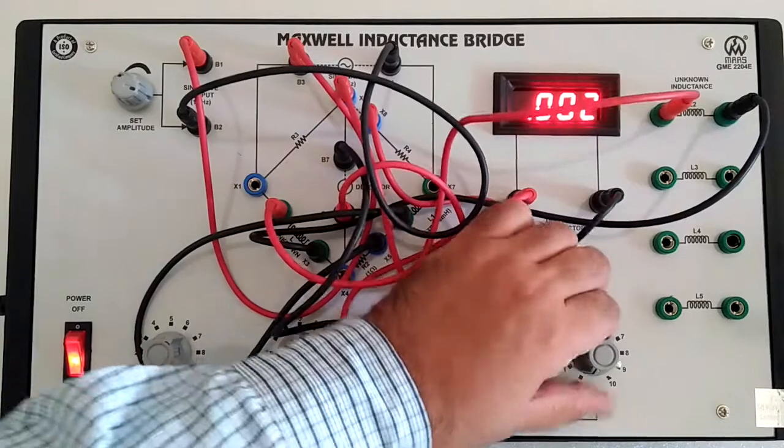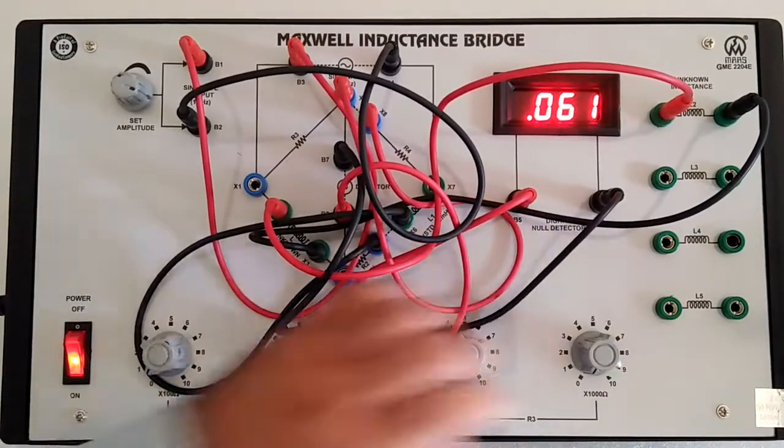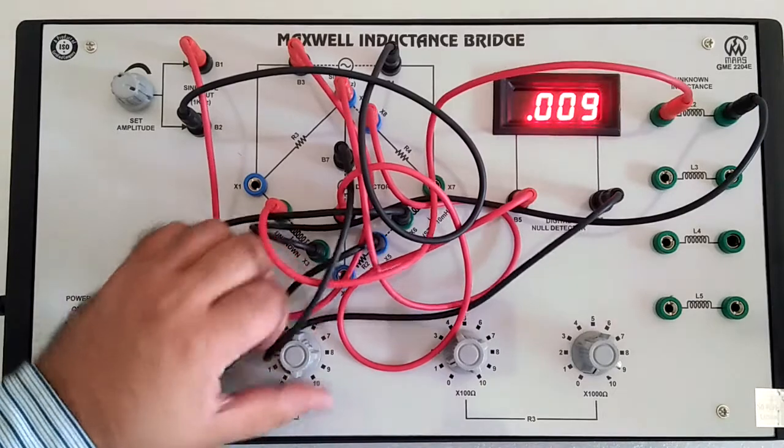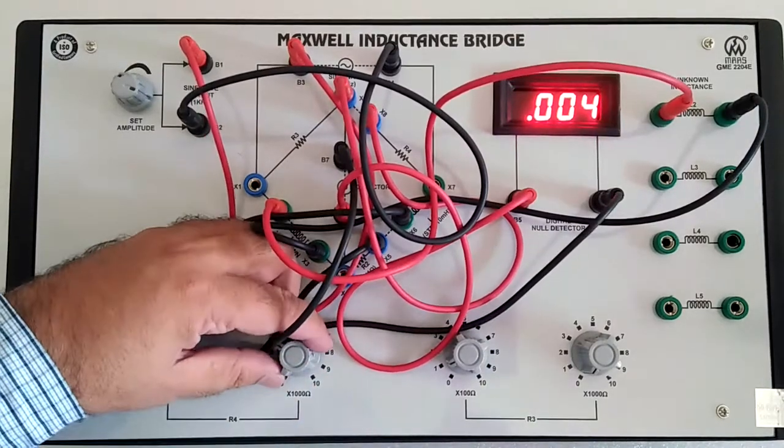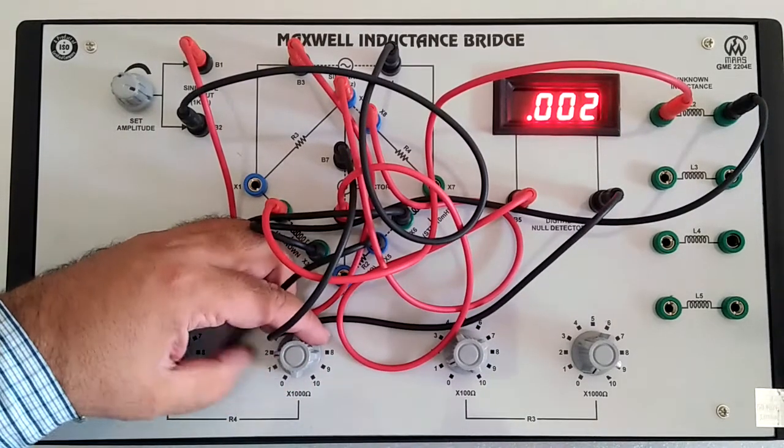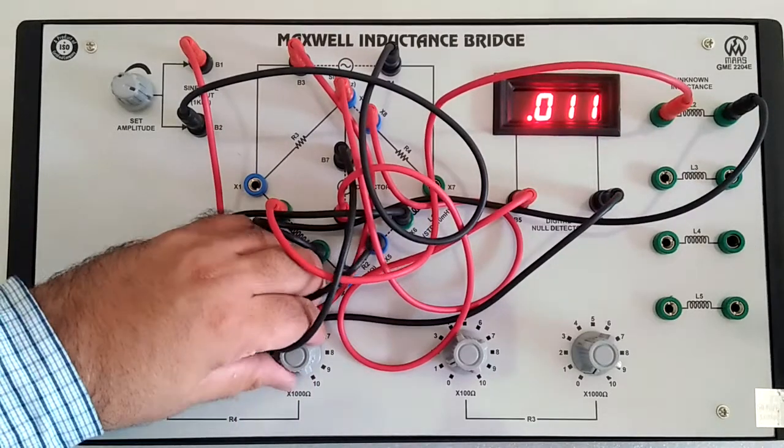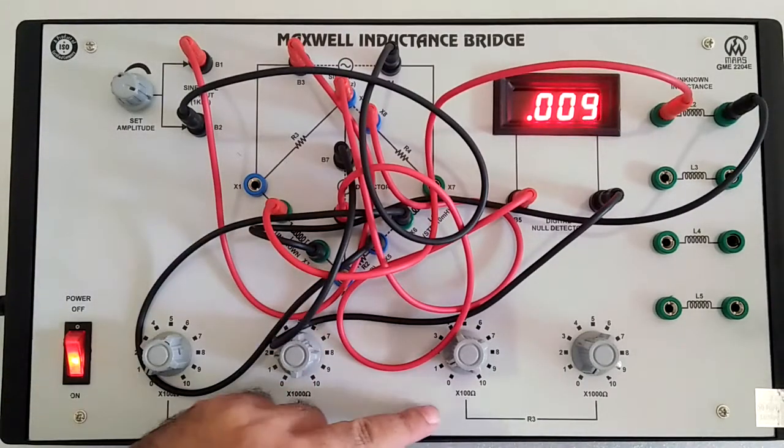Now if we increase this value, it will automatically unbalance. Increase this value, it unbalances. Lower the value, and it goes down. Then increase again. So we have this resonance value.